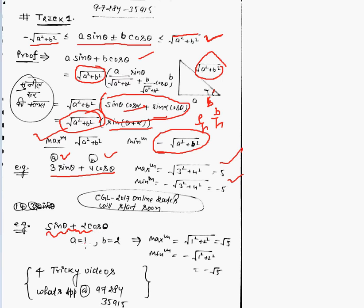See another example: sine θ plus 2 cos θ. A is 1, b is 2. Put here, value is root 5 and minus root 5.